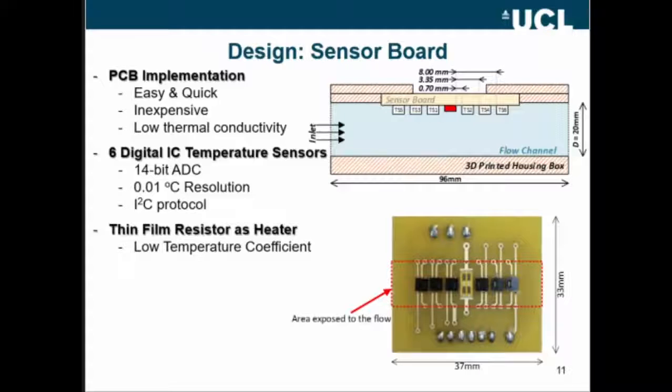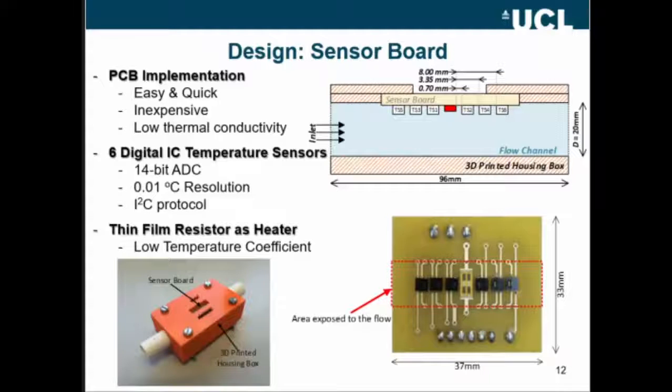Then, we made a 3D printed box that can perfectly fit this sensor board, and we placed it inside there. As a matter of fact, it looks like that. And you can see you still have access to the sensor board from the back side, and only the area here with the dotted lines is exposed to the flow.